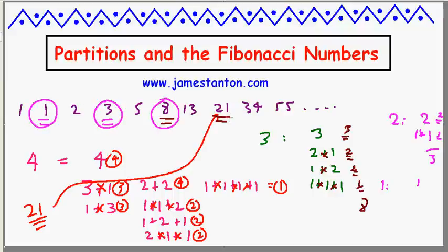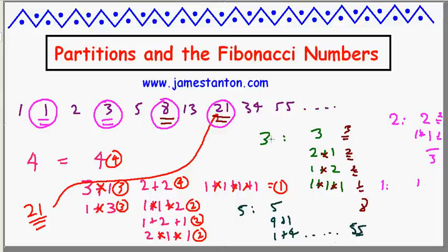It looks like this strange operation on partitions is producing every second Fibonacci number. So I'll make a prediction: if I took the number 5 and wrote all the partitions of 5, considering order as different, changed all the addition signs to multiplication, and added up all those products — I bet you'll get 55. So what's going on? Why are partitions converted to multiplication this way, giving us every second Fibonacci number? That's the mysterious puzzle.